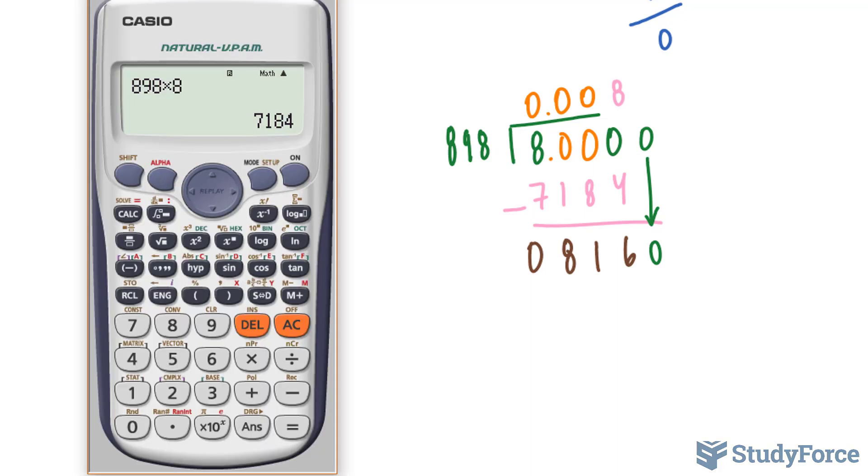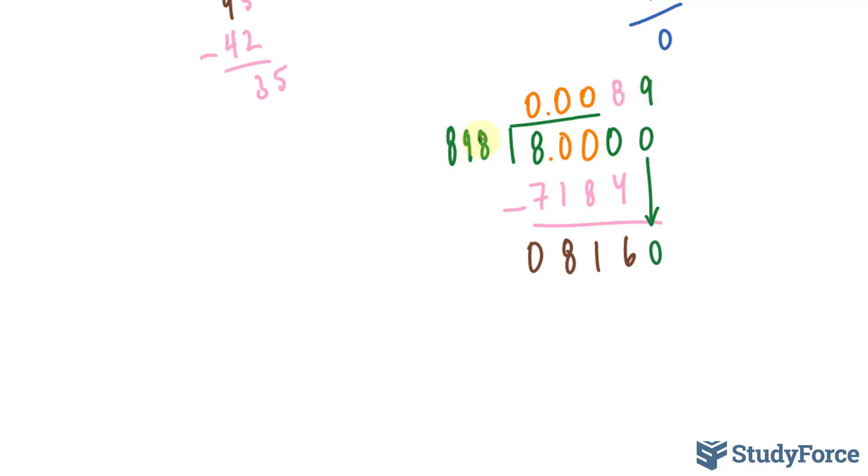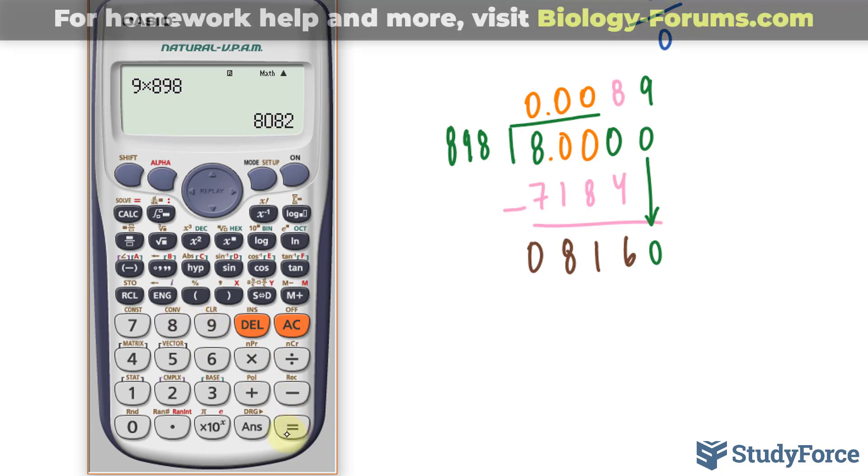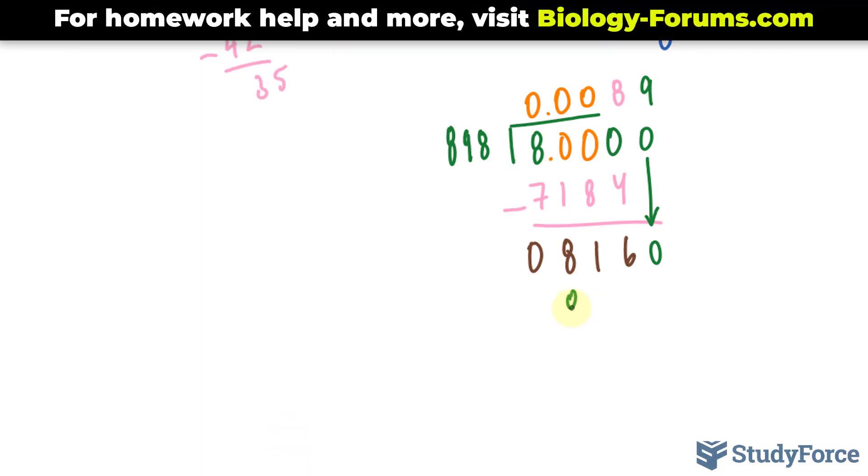Let's use our calculator just for good measure. 898 times 9 gives us something that's slightly less than the one we see. So I'm going to choose 9. 9 times 898 gives us 8,082. And I'm going to stop after this.